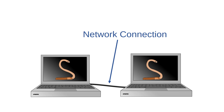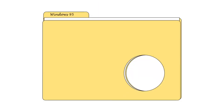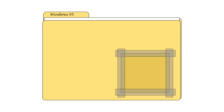Most of us connect to the internet every day, so how is it that we aren't constantly contracting worms? Worms can only spread if they can exploit some known security weakness in a system. When weaknesses become known, software companies usually send out remedies called patches. Patches modify legitimate software to make it more resistant to security breaches. If you install patches for your software as soon as they become available, your computer is much less likely to contract a worm.